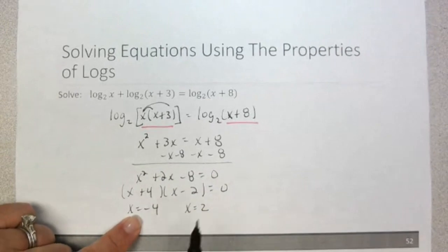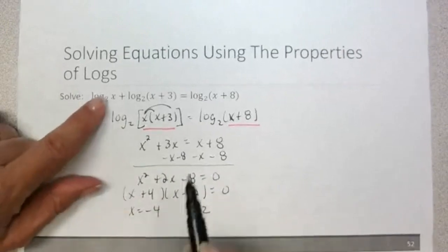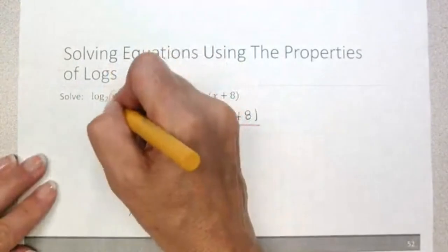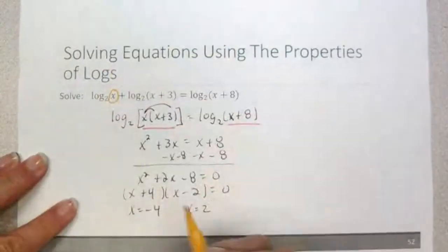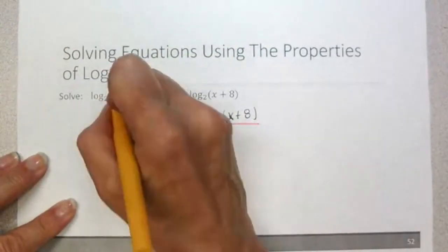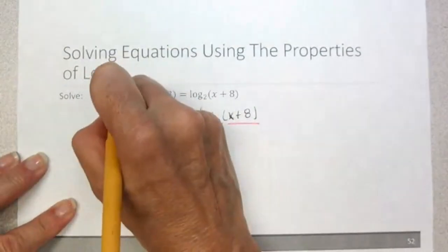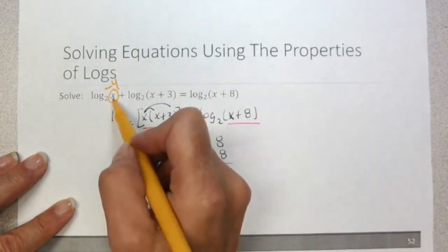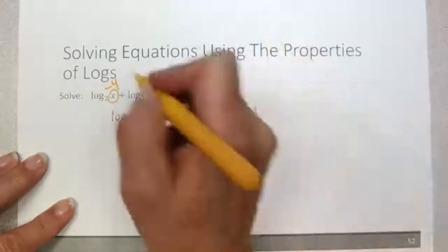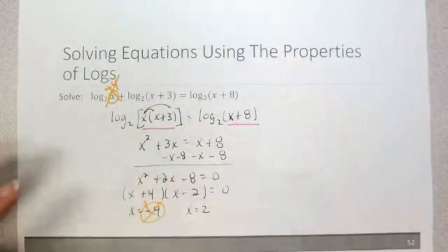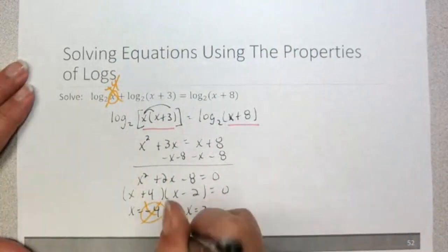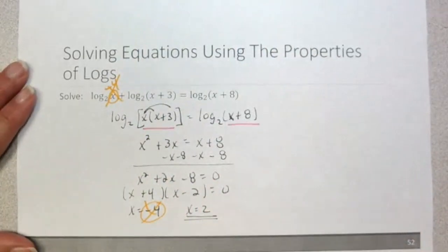The negative solution is suspect. Looking at the first argument, which is just x: a negative 4 cannot be the argument to a logarithm — arguments to logarithms must be positive. So we throw out negative 4 as an extraneous solution. Our final answer is simply x equals 2. And this ends the lecture on logarithmic equations.